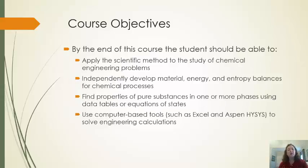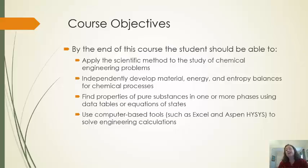The objectives of the course — four things you should be able to say you are good at by the end. First, you can apply the scientific method to the study of chemical engineering problems. We'll review what that is at the end of this video, but this is the basic problem-solving technique used in all of our problems. You'll also be able to independently solve and develop material balances, energy balances, and entropy balances for chemical processes.